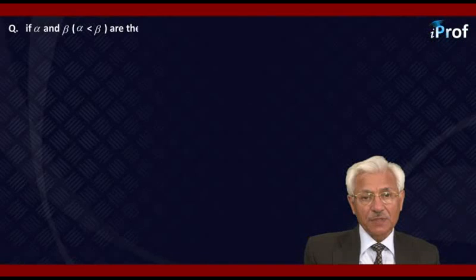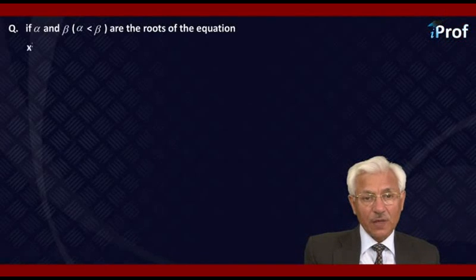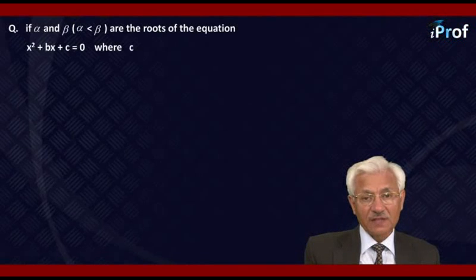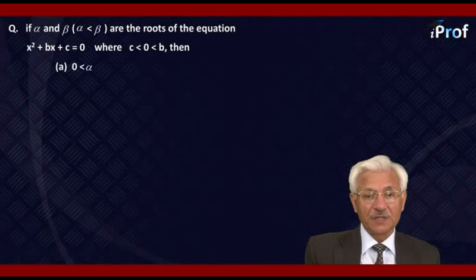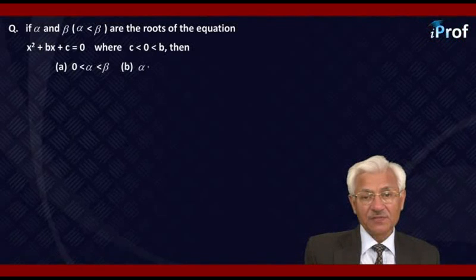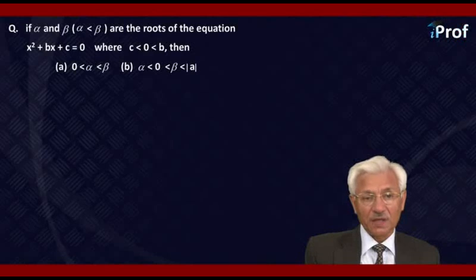If α and β, with α < β, are the roots of the equation x² + bx + c = 0, where c < 0 < b, then the options are: (a) 0 < α < β; (b) α < 0 < β < |α|; or other possibilities for the ordering of α and β.